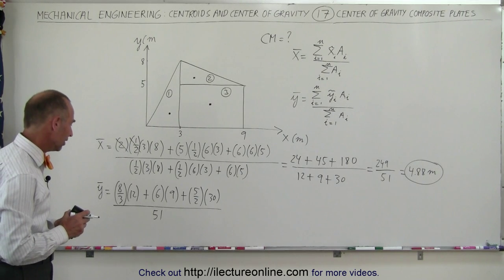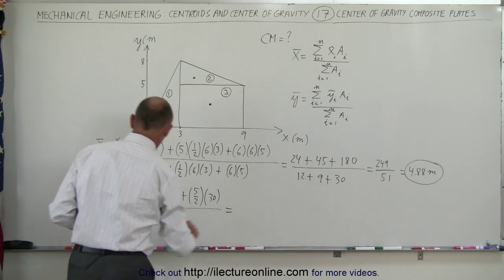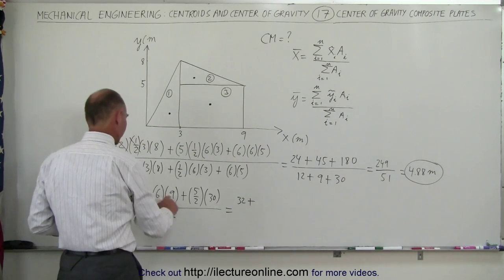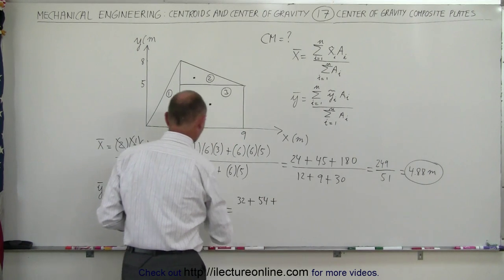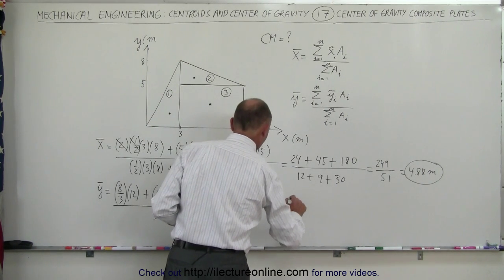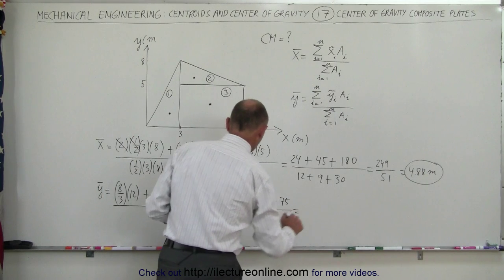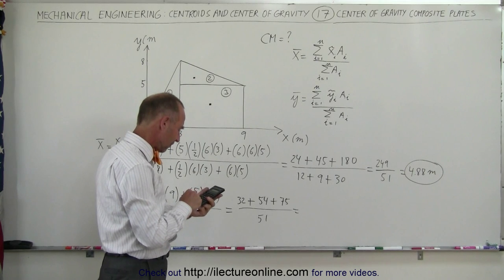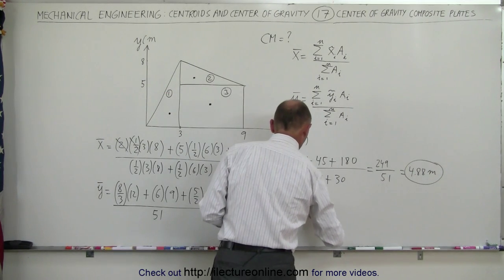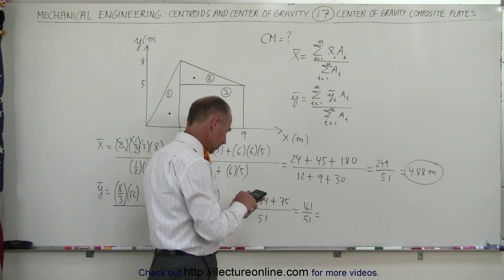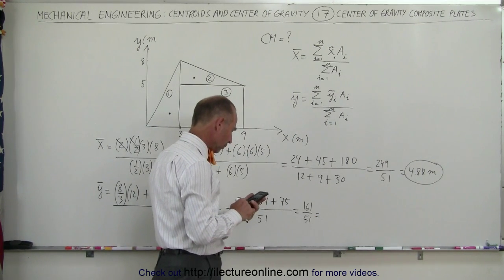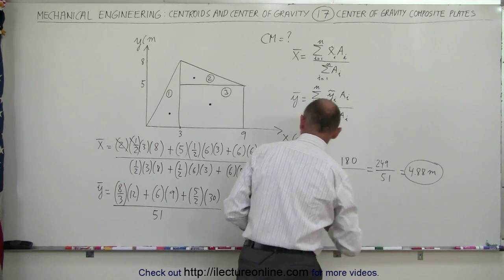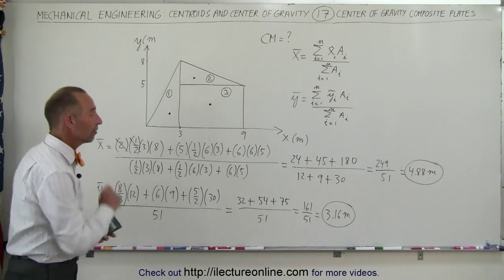The second time around it's a little bit faster and easier. Simplifying: 3 goes into 12 four times, 4 times 8 is 32; plus 54; plus 15 times 5, which is 75 — all divided by 51. So we get 32 plus 54 plus 75, that's 161, divided by 51. Dividing by 51 equals 3.16 — that is the y-coordinate of the center of mass of this plate, 3.16 meters.